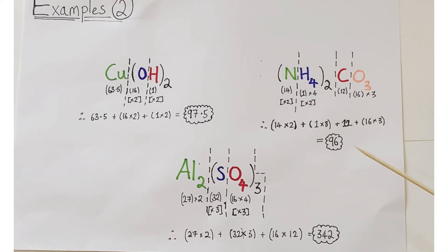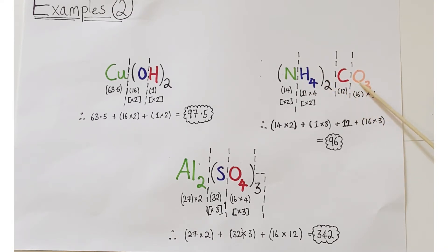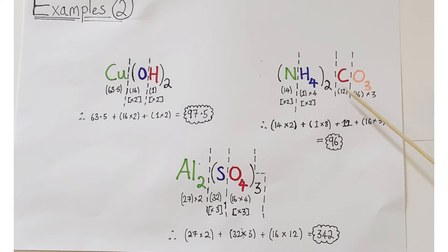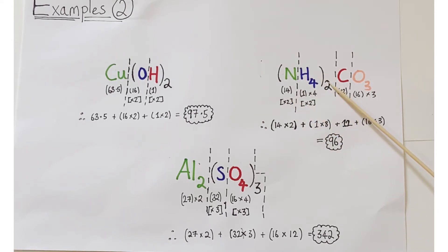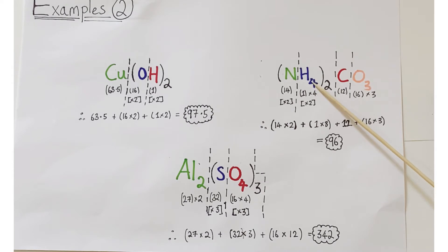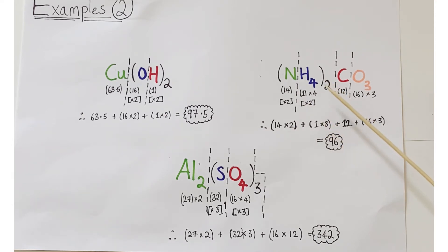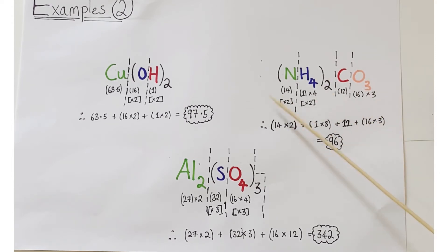Example two: ammonium carbonate, (NH₄)₂CO₃. The nitrogen and hydrogen of the ammonium ion are inside the bracket with a multiplying factor of 2 outside. Carbon is 12. Oxygen has subscript 3: 16 × 3. Nitrogen inside the bracket: 2 × 14. Four hydrogens inside the bracket multiplied by 2 on the outside gives 4 × 2 = 8 hydrogen atoms: 1 × 8. So (14 × 2) + (1 × 8) + 12 + (16 × 3) = 96.